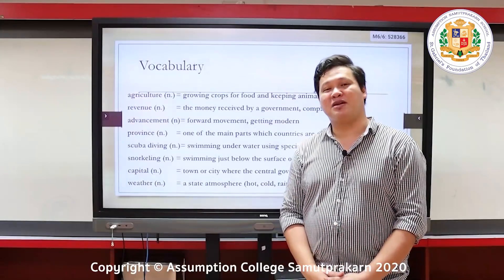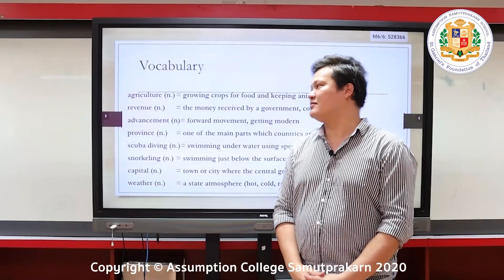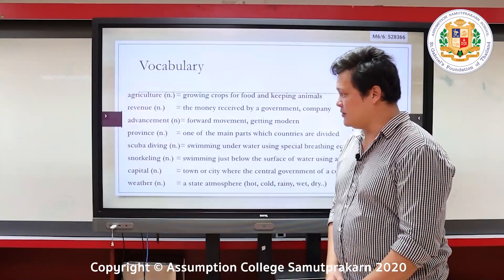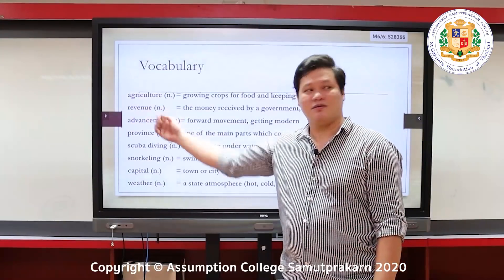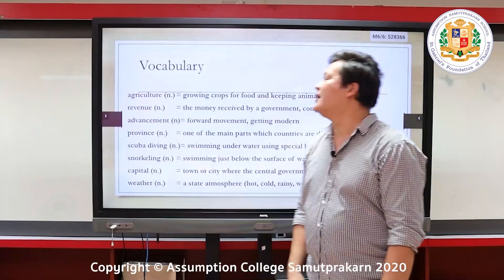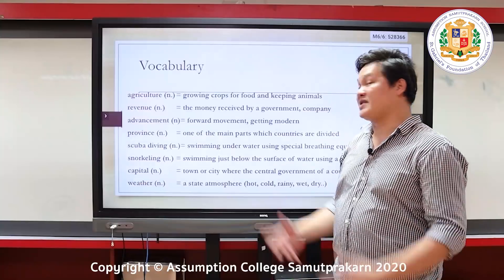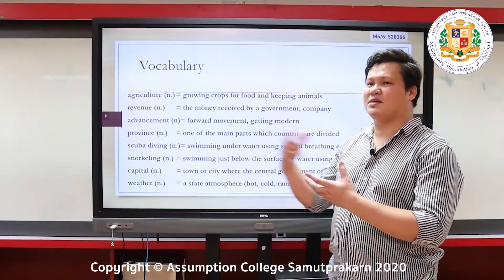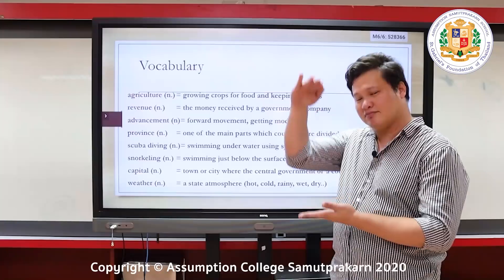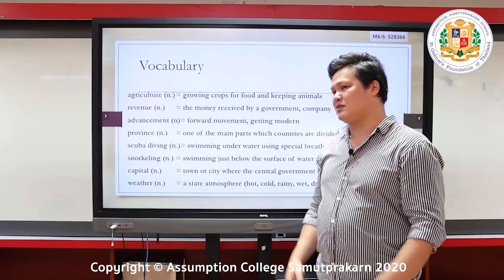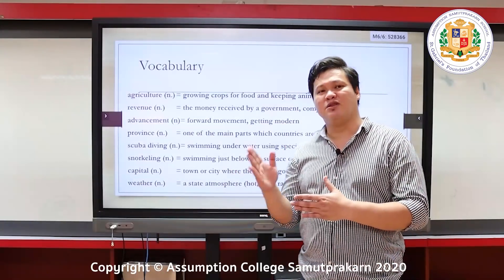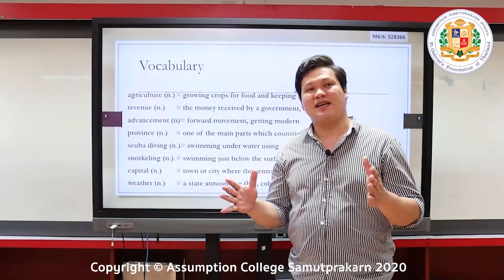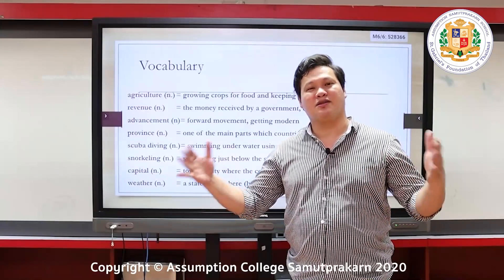You also keep animals — sheep, cows. Revenue: the money received by the government or from a company. Advancement: it's a forward movement, or when a society is going modern.